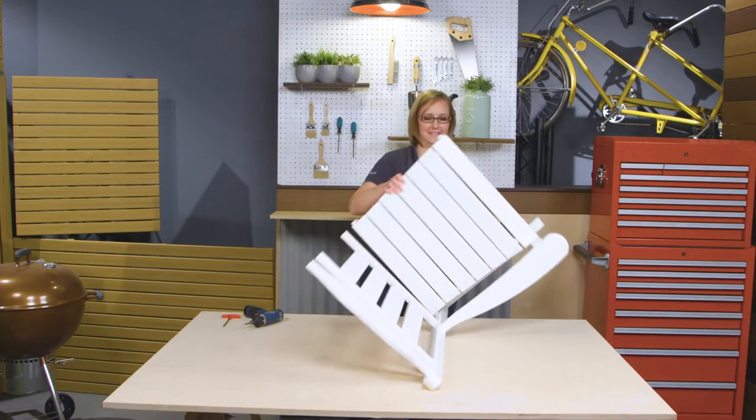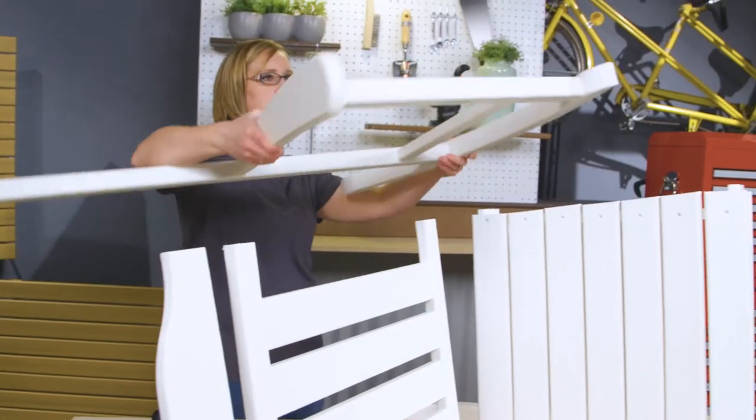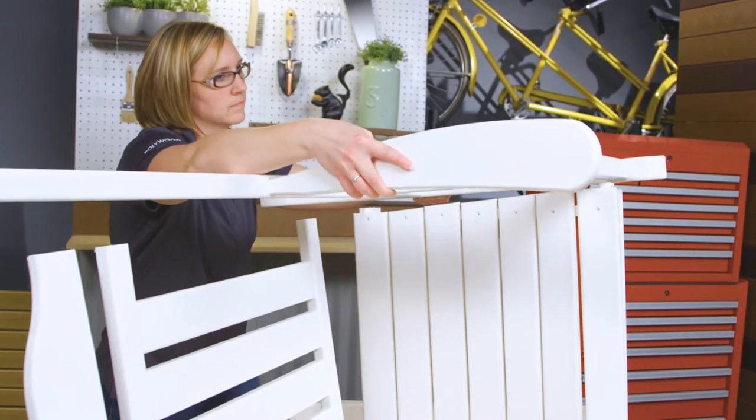Flip the rocker over and attach the left side frame to the rest of the assembled rocker using 3-inch screws and 2.5-inch screws.